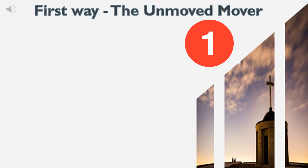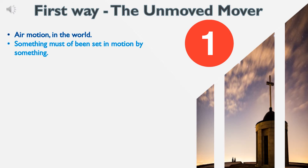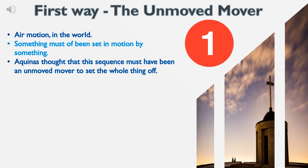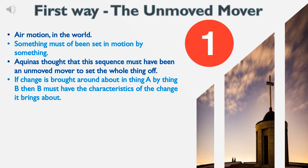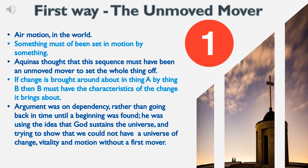First Way: the Unmoved Mover. There is motion in the world, and something must have been set in motion by something else. Aquinas thought there must have been an unmoved mover to set the whole thing off. If change is brought about in thing A by thing B, then B must have the characteristics of the change it brings about. The argument was based on dependency rather than going back in time. He was using the idea that God sustains the universe, and trying to show that we could not have a universe of change, vitality, and motion without a first mover.